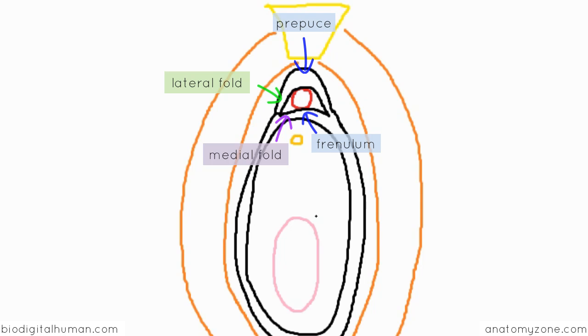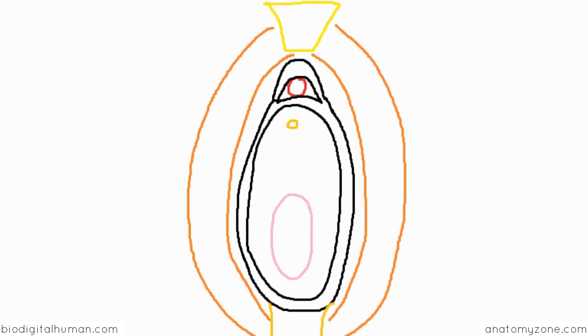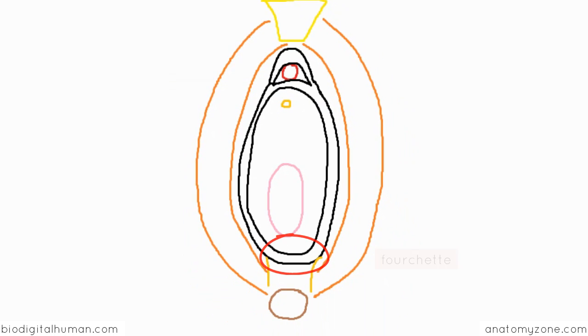So posteriorly, the labia minora join together to form the fourchette. The area actually surrounded by the labia minora containing the urethral orifice and the vaginal orifice is known as the vestibule.